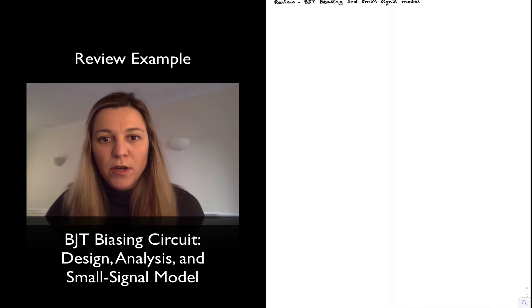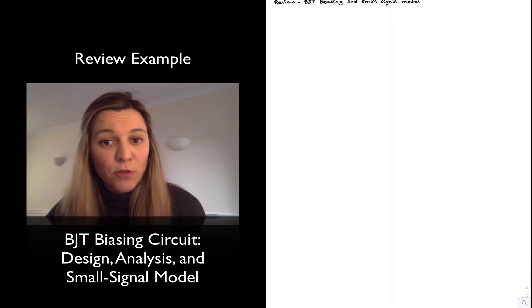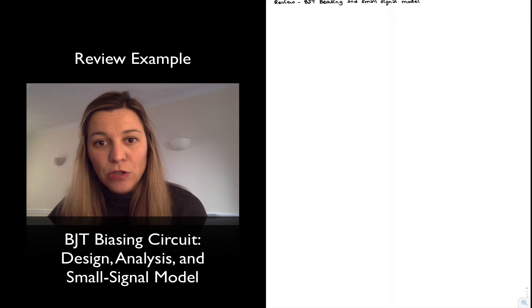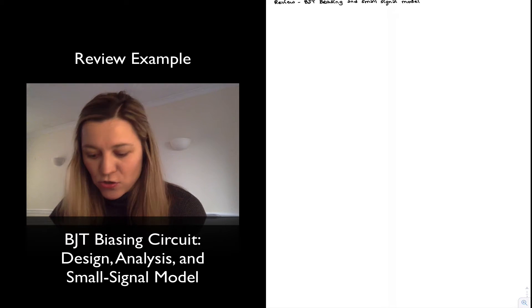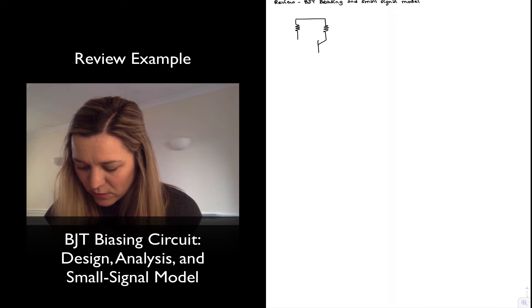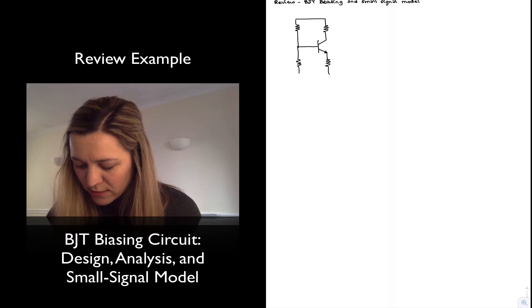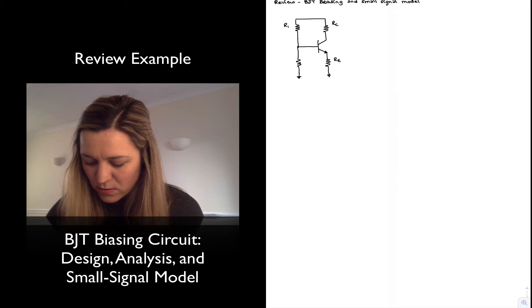So let's say I wanted to design a biasing network that is robust to beta variations for a BJT transistor. I want to run this from a supply of 18 volts and bias the transistor at a collector current of 2.5 milliamps. I'm going to draw my biasing network — a 4-resistor or voltage divider biasing network because it is robust to beta variations. The circuit consists of a BJT transistor with resistors Rc and Re connected to the collector and emitter terminals, as well as a voltage divider R1 and R2 connected at the base. This is my Vcc — 18 volts.